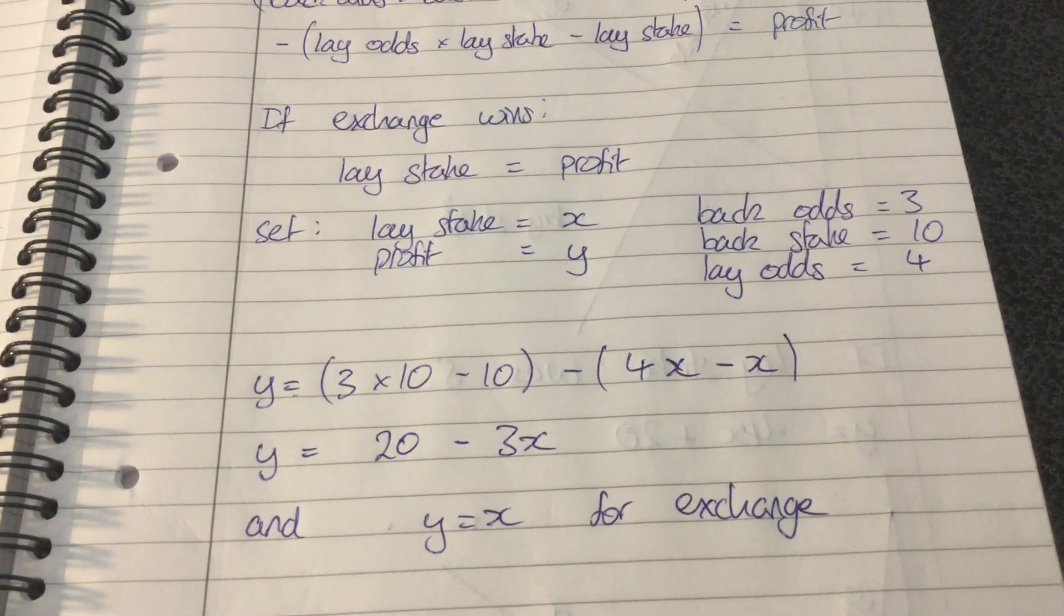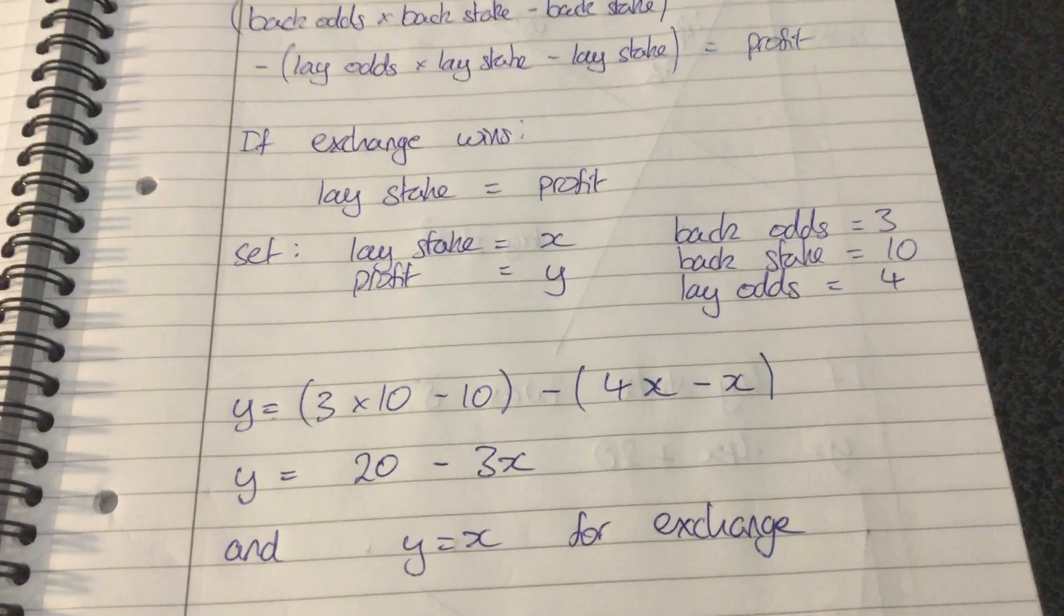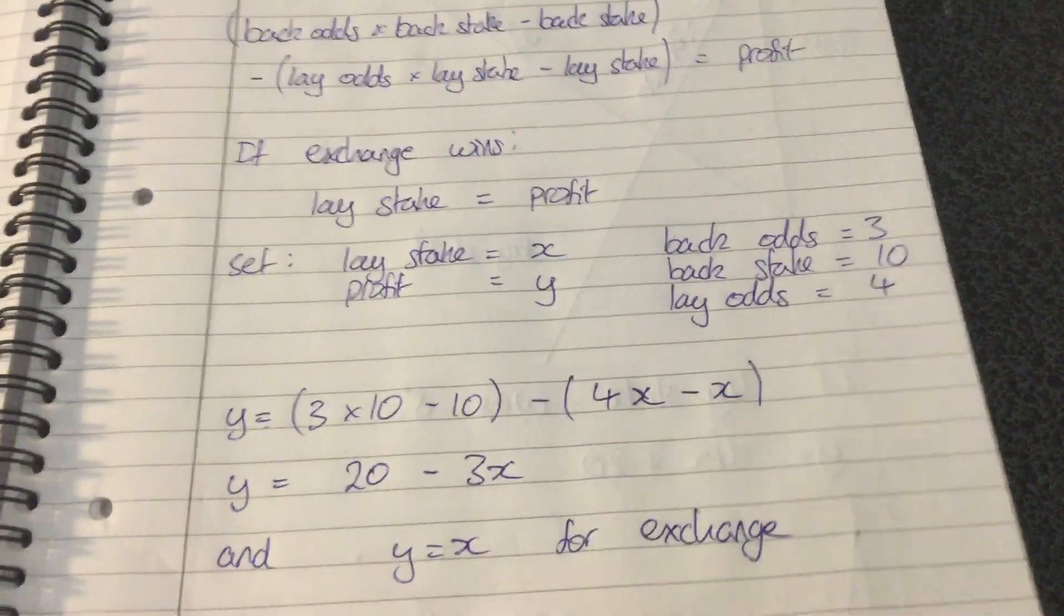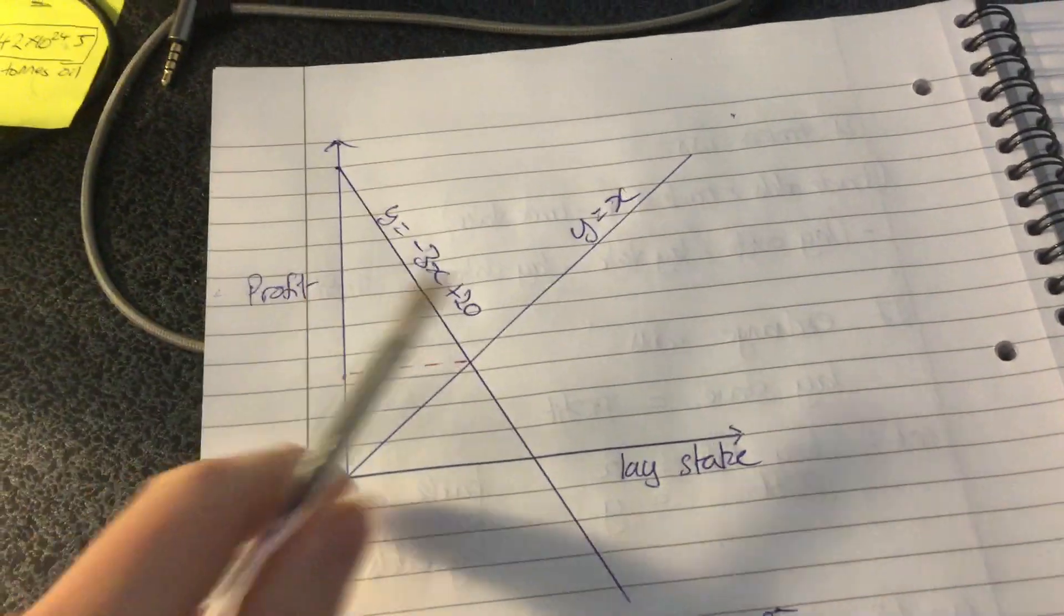Simplifying we get y is equal to 20 minus 3x, and that's just a straight line relationship mx plus c. And for the exchange again we've got y is equal to x, don't need to simplify that at all.